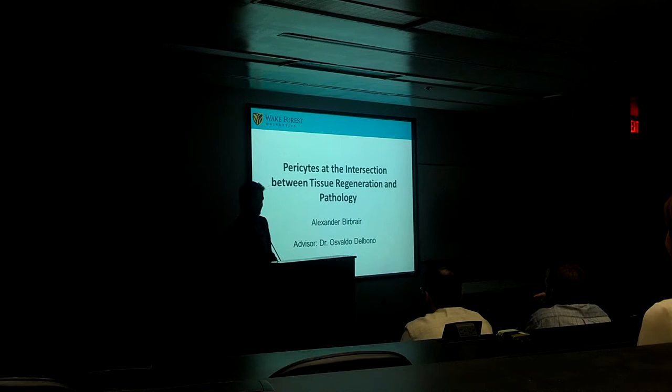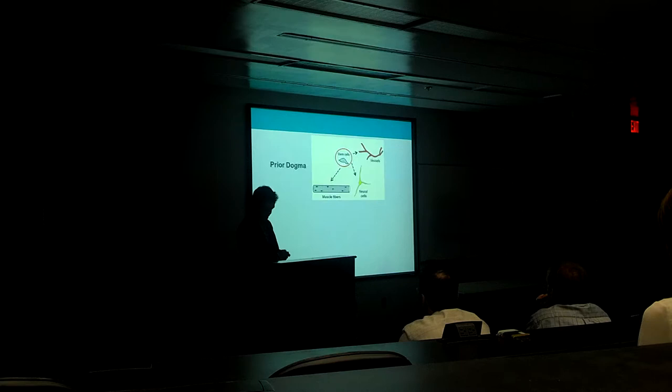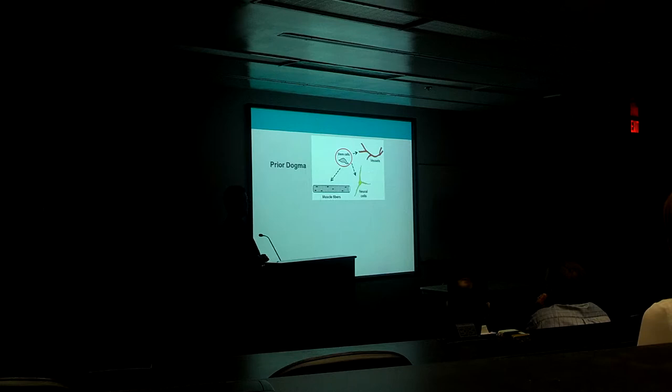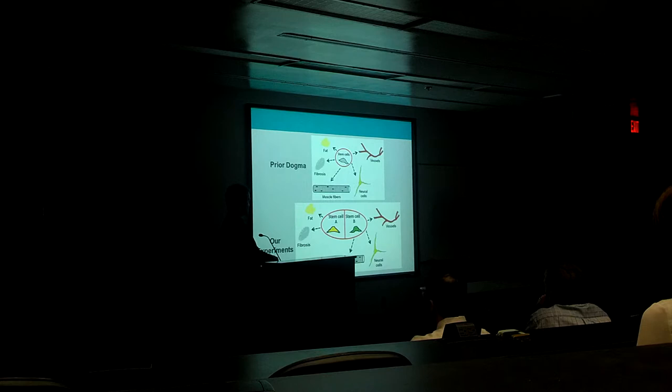Good morning everybody. Thanks a lot for being here today. The title of my talk will be Pericytes at the Intersection between Tissue Regeneration and Pathology. It is widely accepted that tissue regeneration depends on stem cells. However, under certain pathological conditions, those cells may form some unwanted tissues, such as fibrous and adipose tissue, which impair organ function. What we found is that sometimes the pericytes that form those undesired tissues differ from the ones that participate in tissue regeneration.